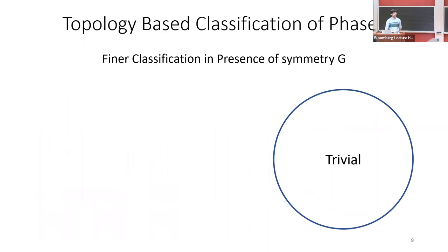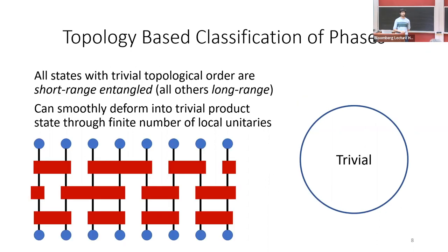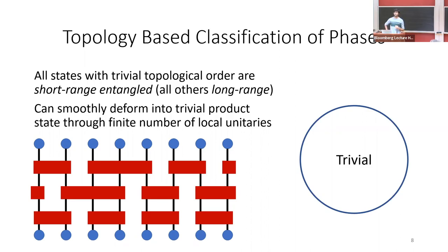This classification can be made finer if we start imposing symmetries. If I take the set of short-range entangled ground states and add a global symmetry G, I can break up what was previously a trivial phase into different phases. These are called symmetry protected topological phases. In this case, if I wanted to take some ground state and turn it into a trivial product state, there are cases when you cannot do that without breaking the symmetry — that would be an example of a non-trivial SPT phase.